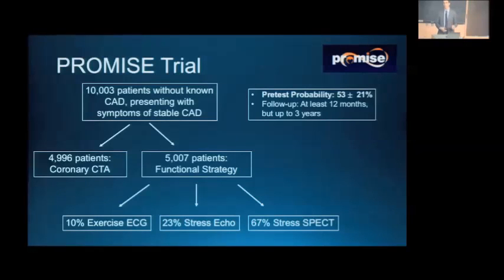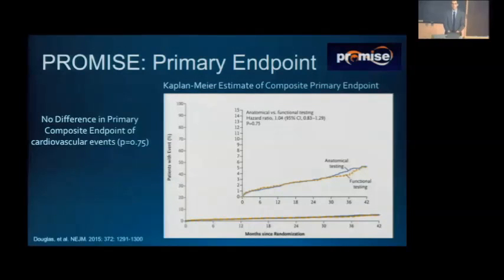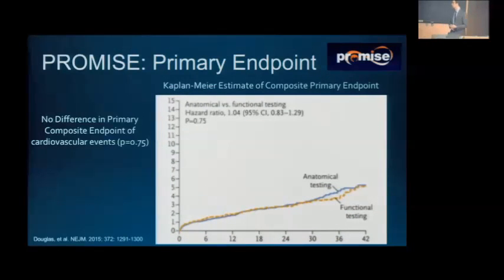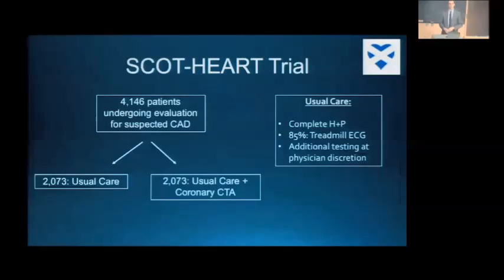The bottom line of the PROMISE trial was that there was no difference in event rates between patients randomized to coronary CTA versus a functional strategy. Looking at the event curves, they were really superimposed on each other for the composite outcome of death, MI, revascularization, and hospitalization for unstable angina. The PROMISE trial showed no superiority of coronary CTA over functional testing.